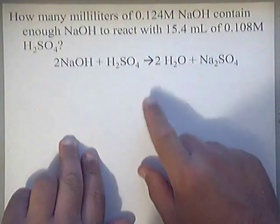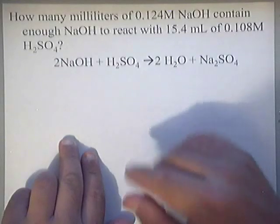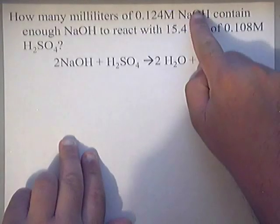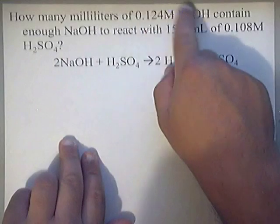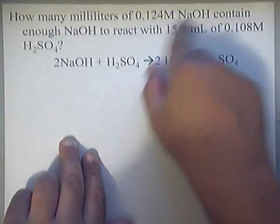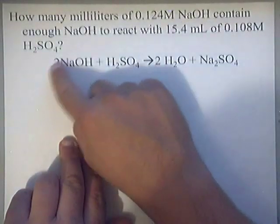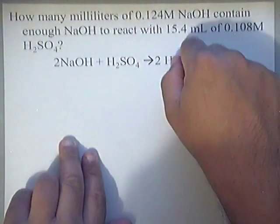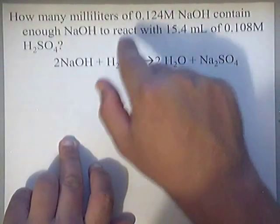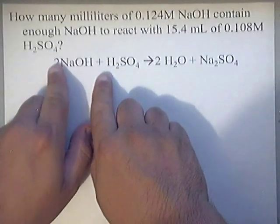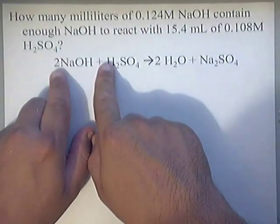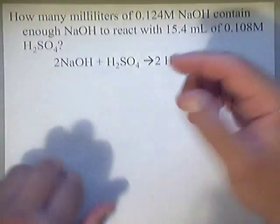Let me tell you why you're not going to use M1V1 equals M2V2 here. One clear indication: they give us an equation, and they mention two different types of things — an acid and a base. Since these are two totally different substances, it's not all H₂SO₄ and not all NaOH. Also, the ratio of sodium hydroxide to H₂SO₄ is not equal — it's two to one. That's why you have to use stoichiometry on this problem.